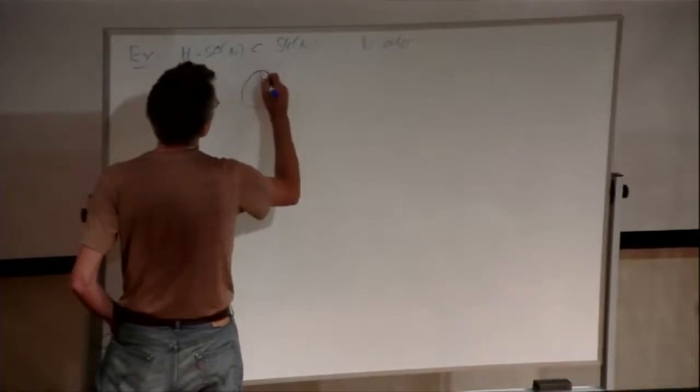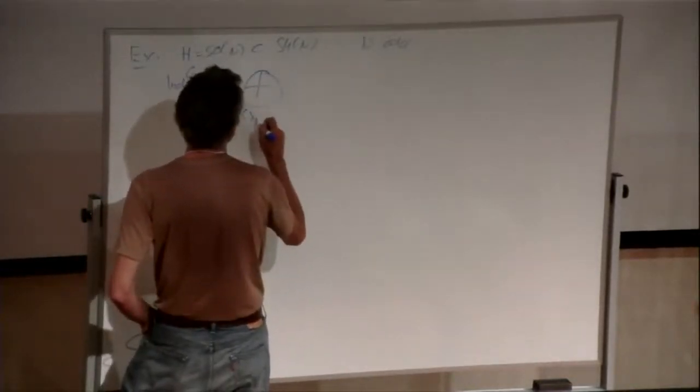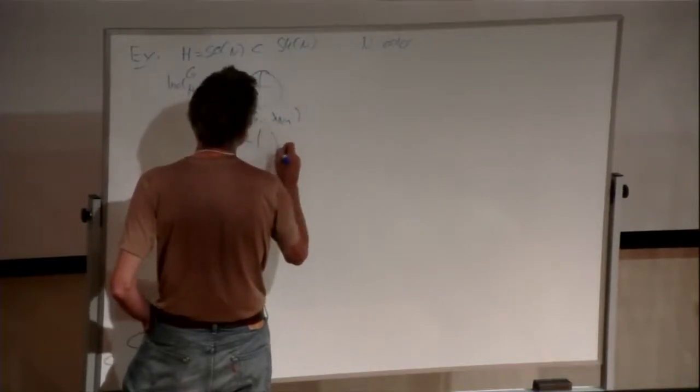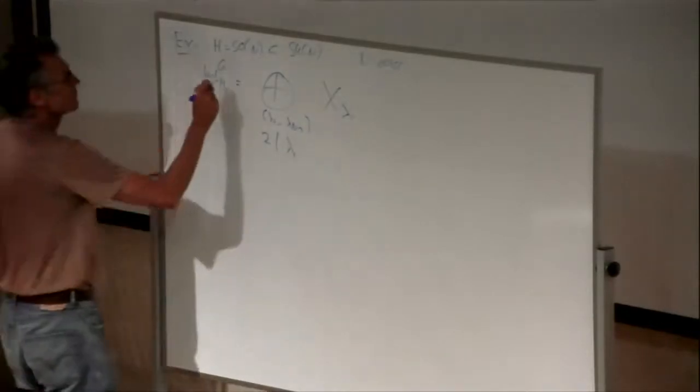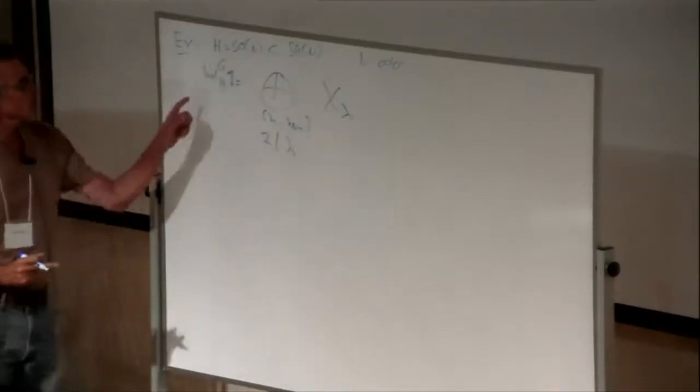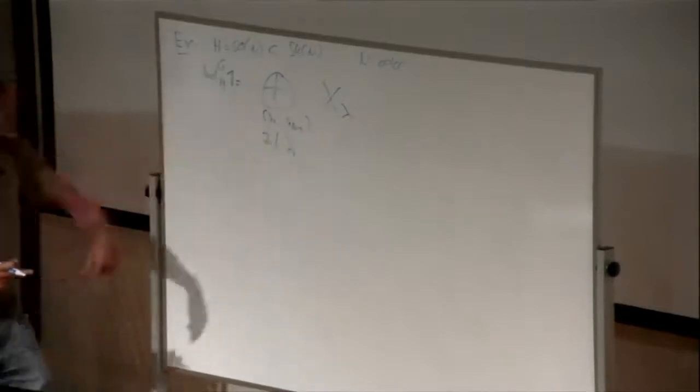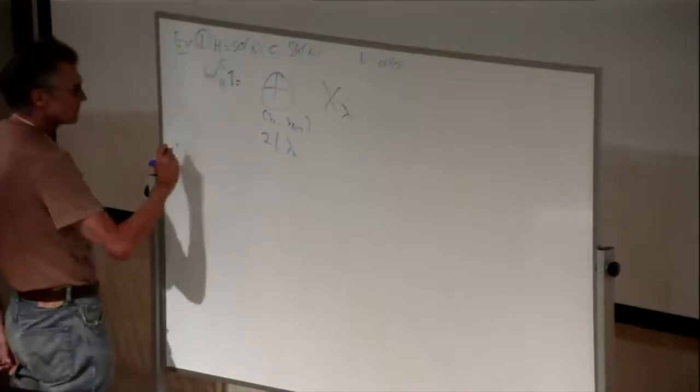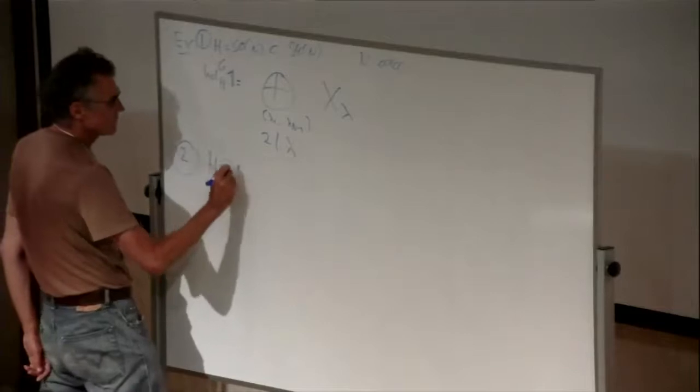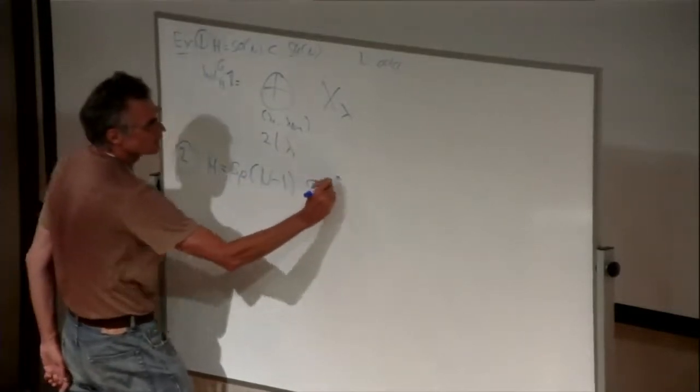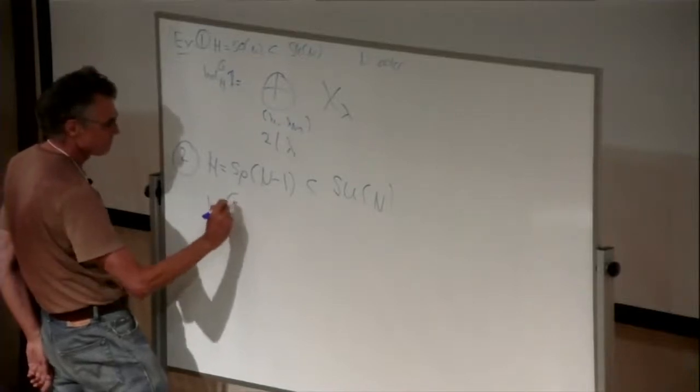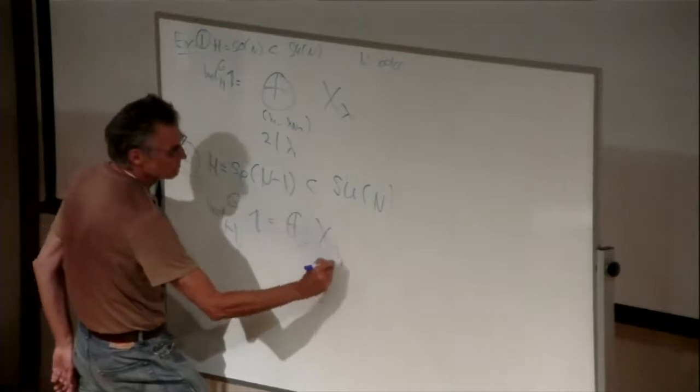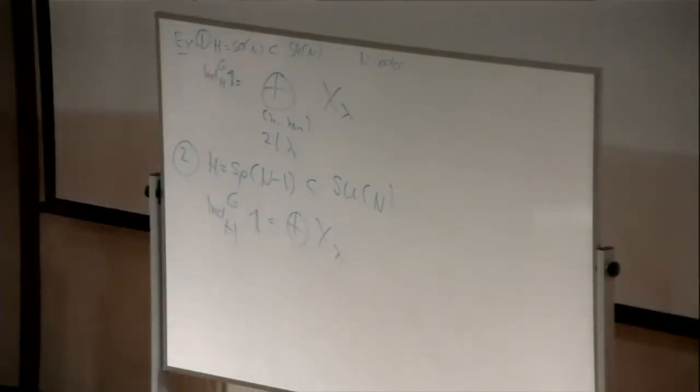Then I can actually describe this induction from H to G. SO(N) into SU(N) can be described as a direct sum of lambda one lambda and minus one where two divides lambda I of X lambda. There's some combinatorial description how to do this. Another one is SP(N-1) into SU(N), then we get all of them with no restriction.